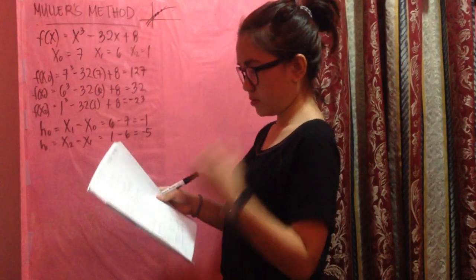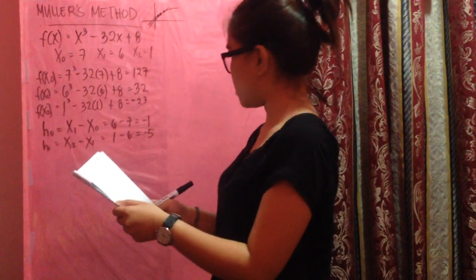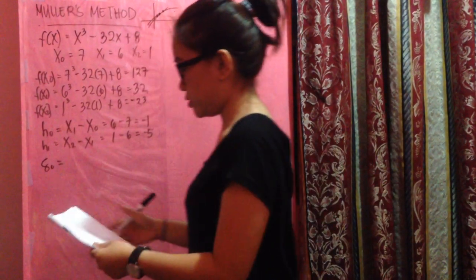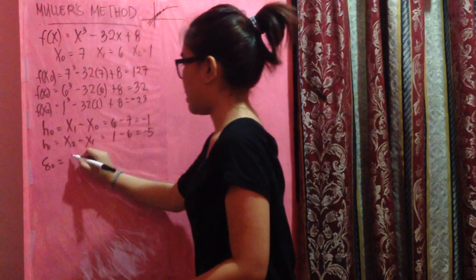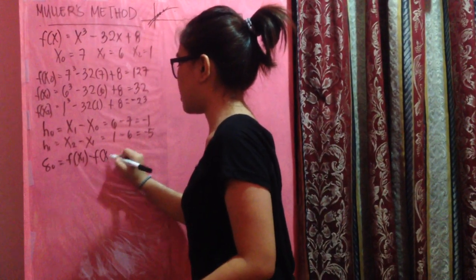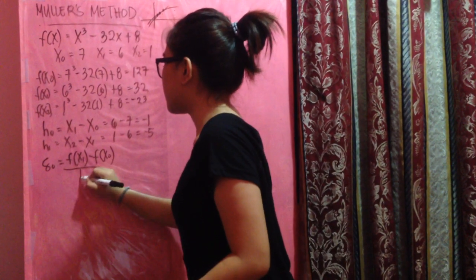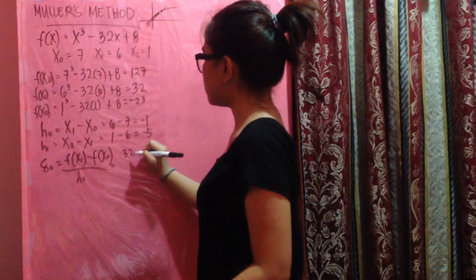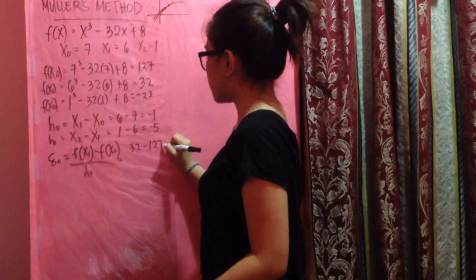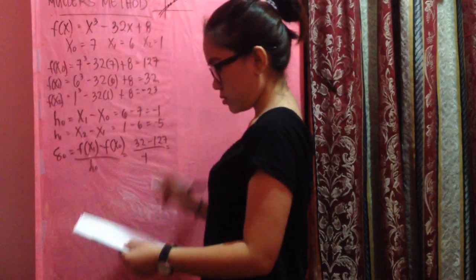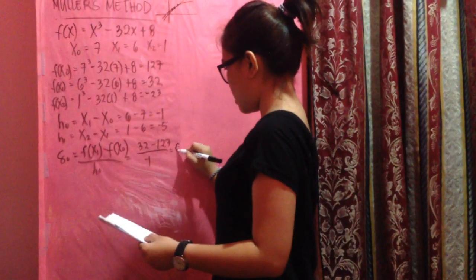Next is sigma 0, which is f(x₁) minus f(x₀) over h₀. f(x₀), x₁, 32, minus 117 over h₀. The answer is 95.